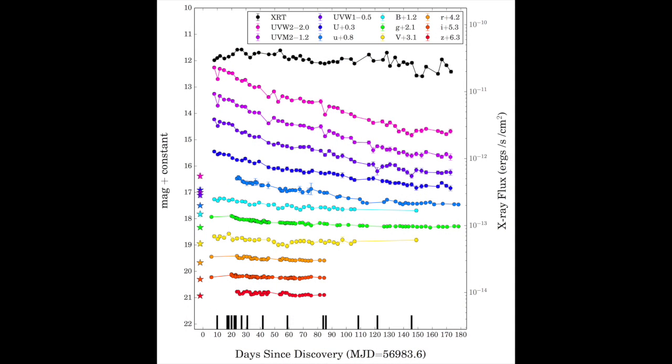In the light curve of the transient shown here, data in different filters are shown in different colors, with colored stars indicating the host galaxy magnitudes in the same filters. The light curve shows that the transient was much brighter in the UV and bluer optical wavelengths than the host, and that the extra UV emission was long-lasting, similar to what is seen in other TDE candidates.